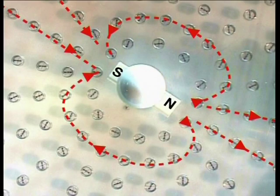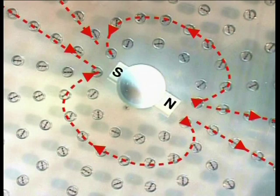Where have you come across a similar set of properties before? Right, when you learned about magnets. In the series of lessons on magnetism we used the idea of magnetic fields around magnets to explain this behavior.